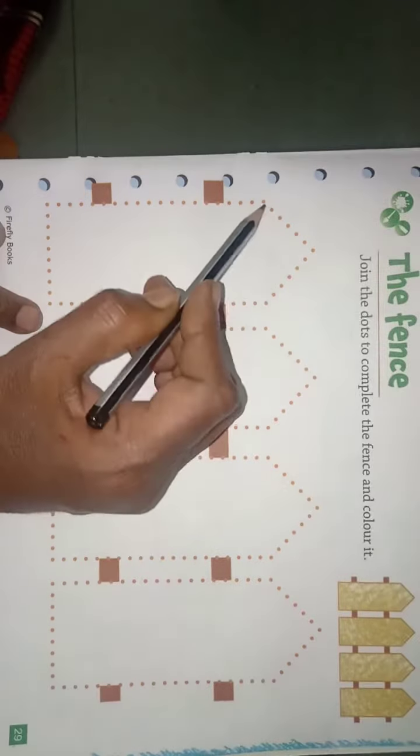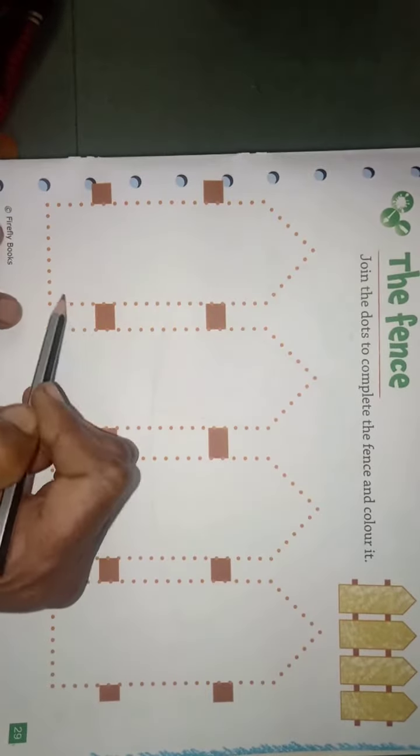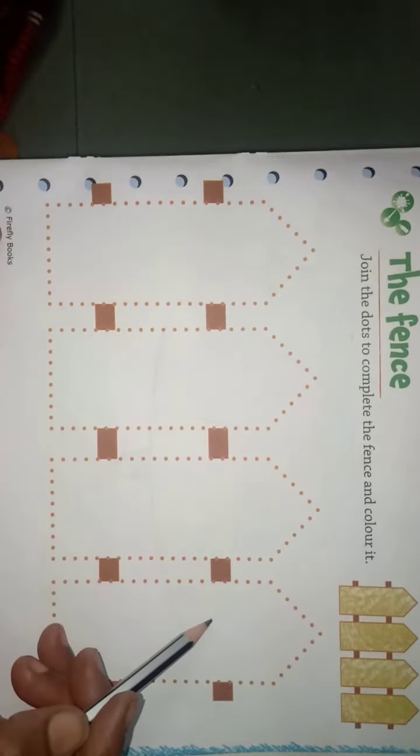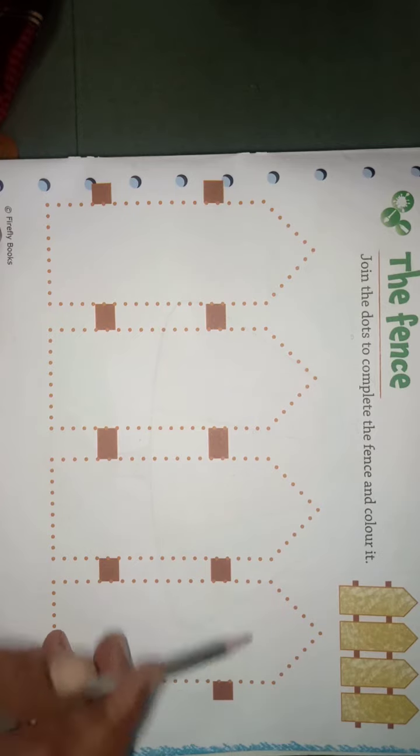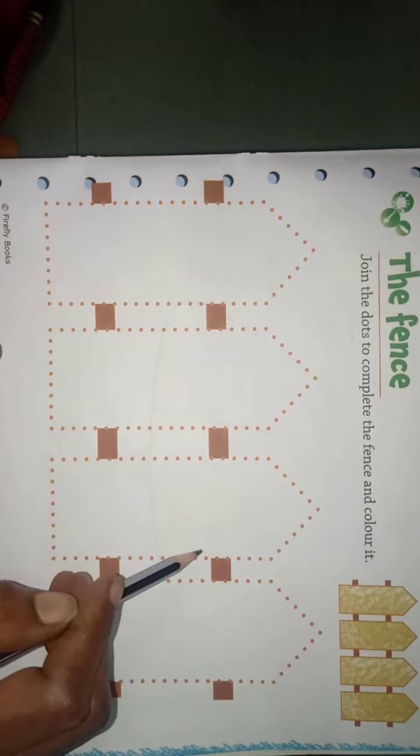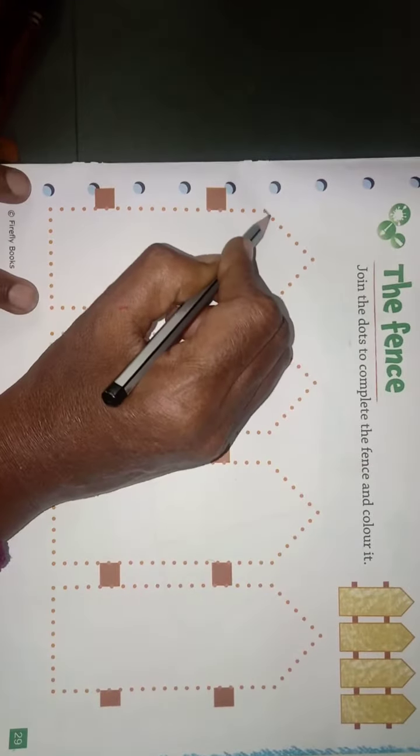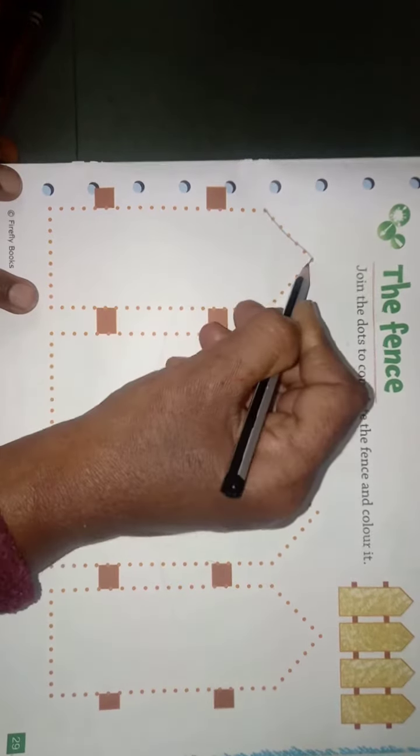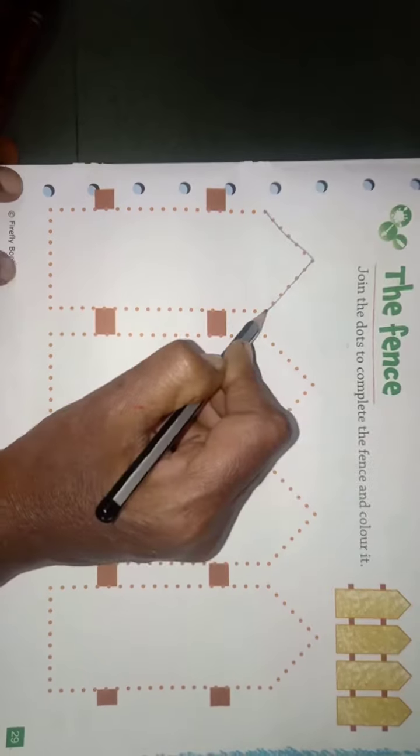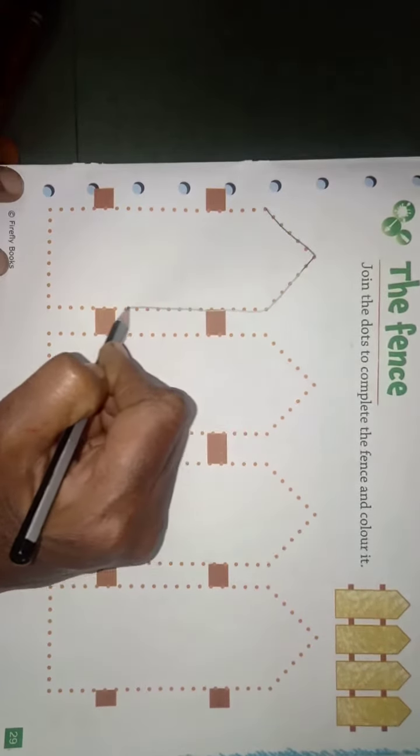First of all, you have to trace all the points and complete the pattern of the fence, and then you have to fill color in this picture. Okay, so let's start. You have to trace all the dots and make the fence like this.